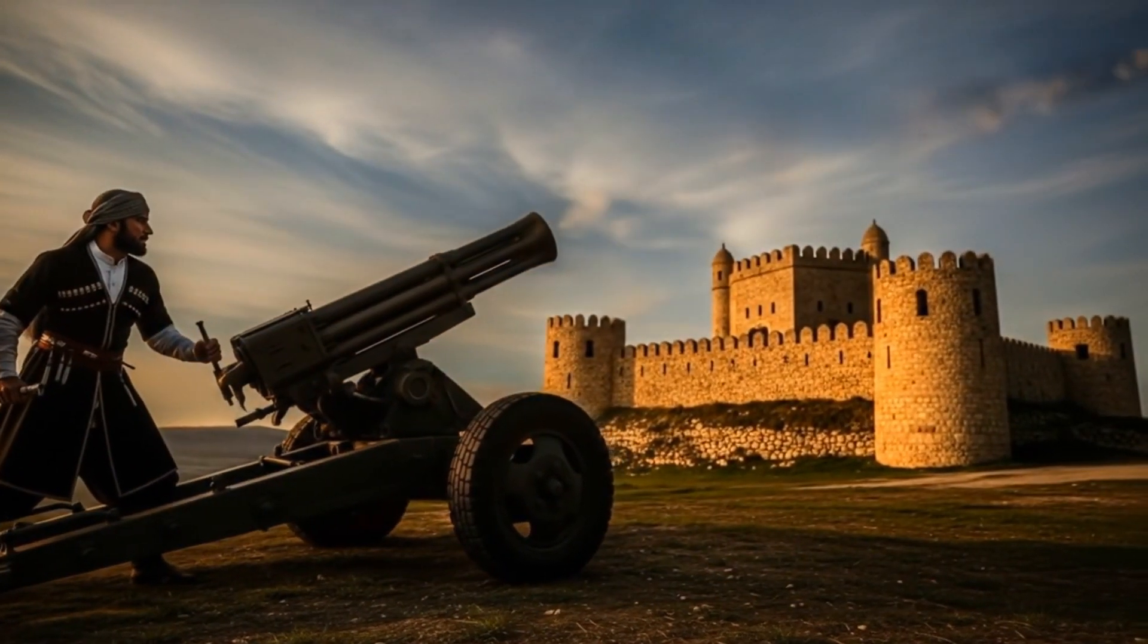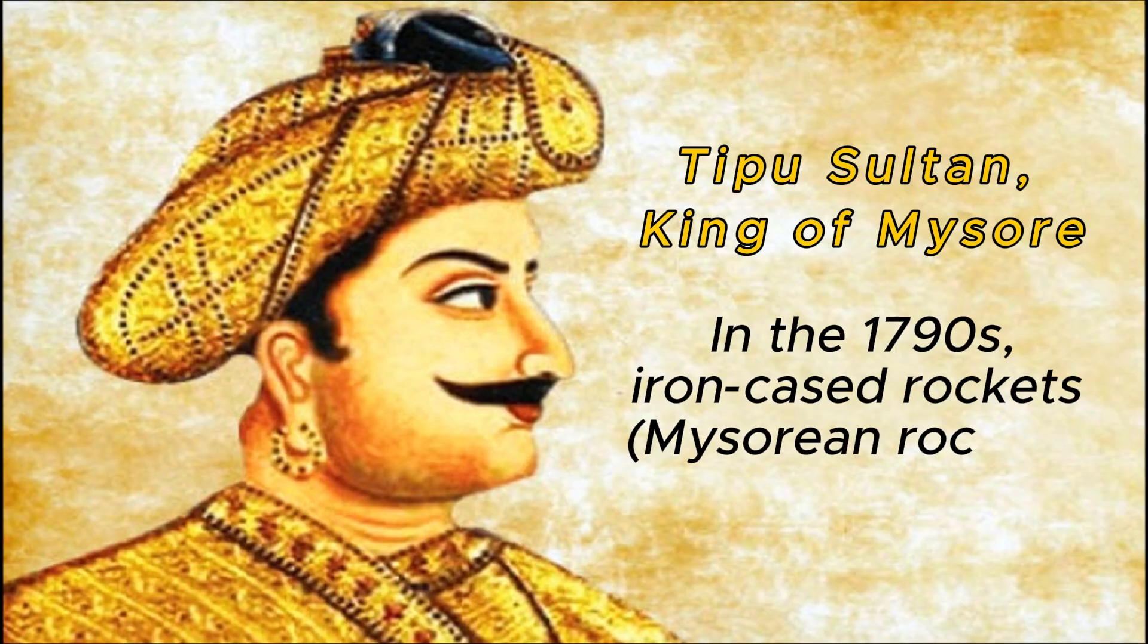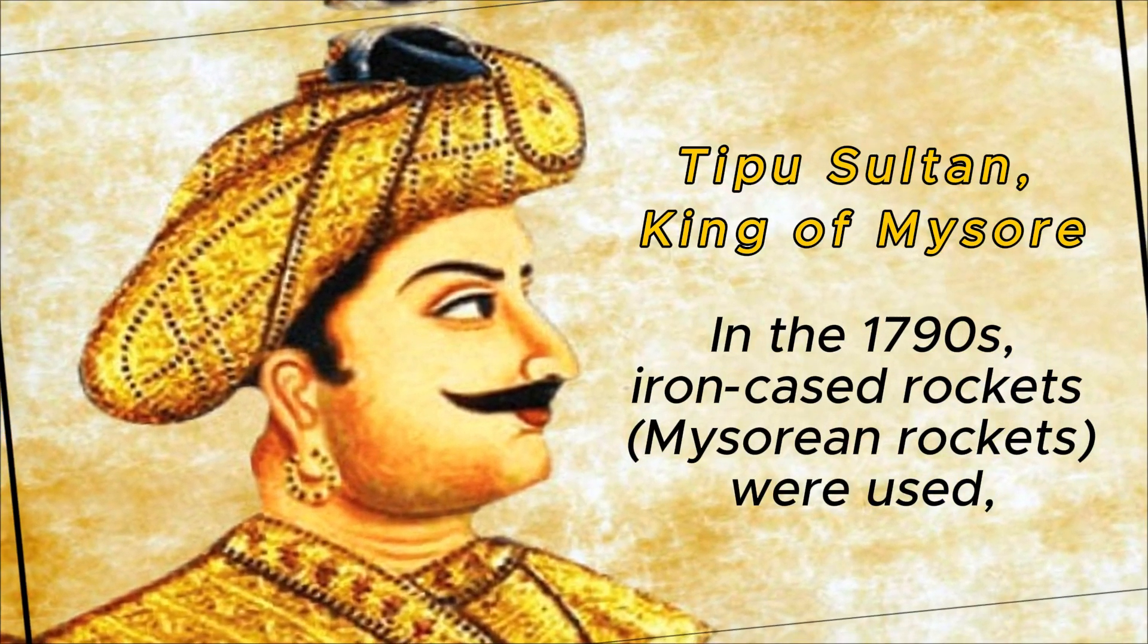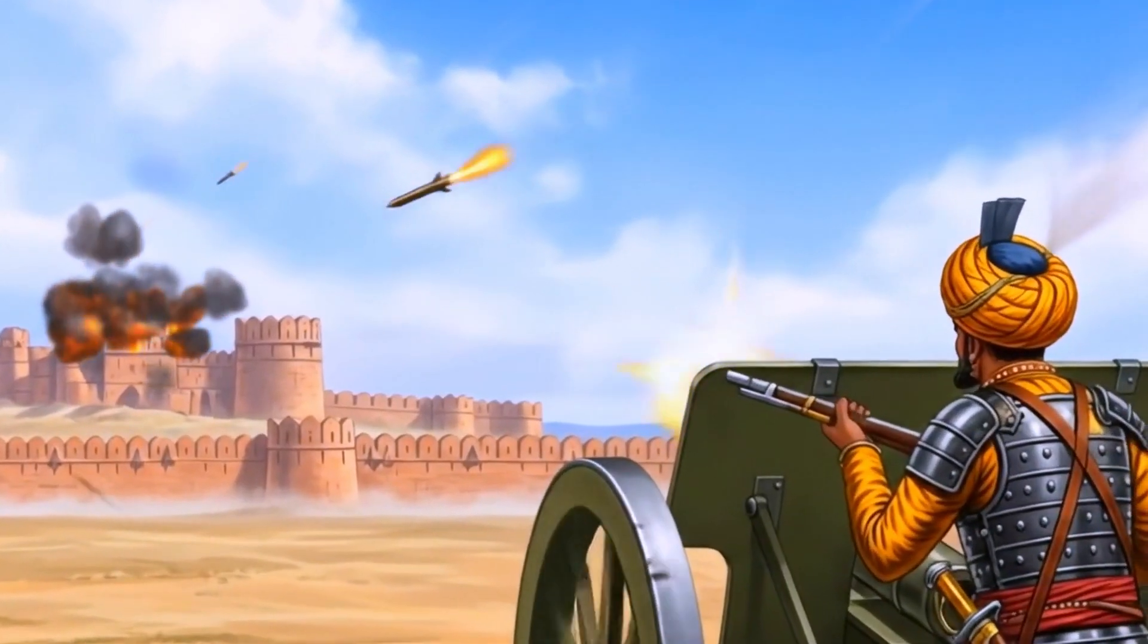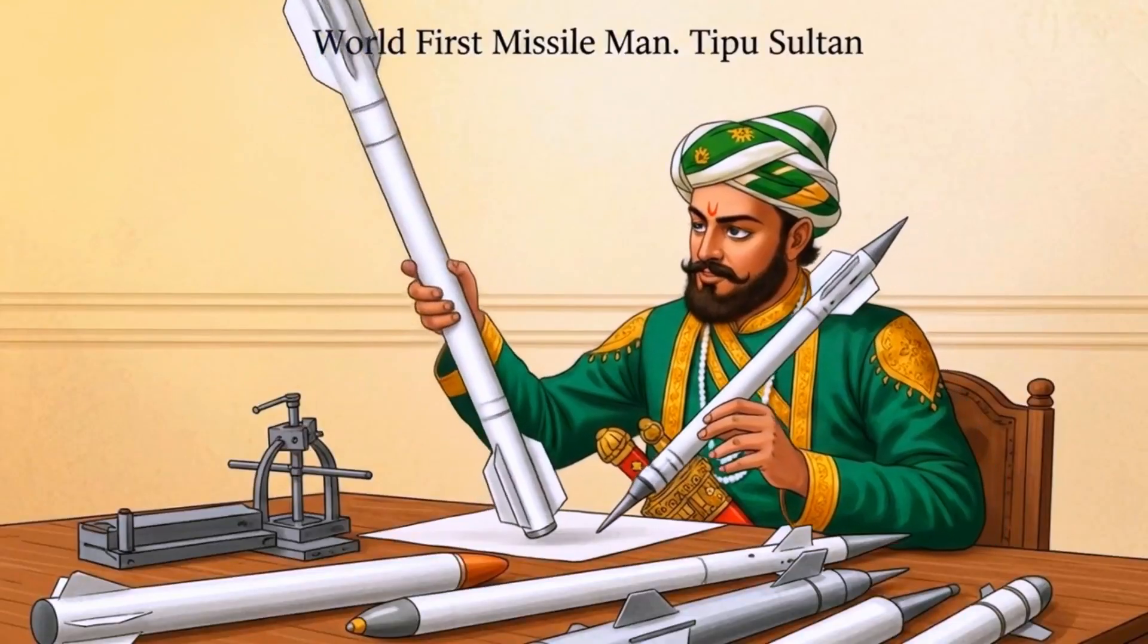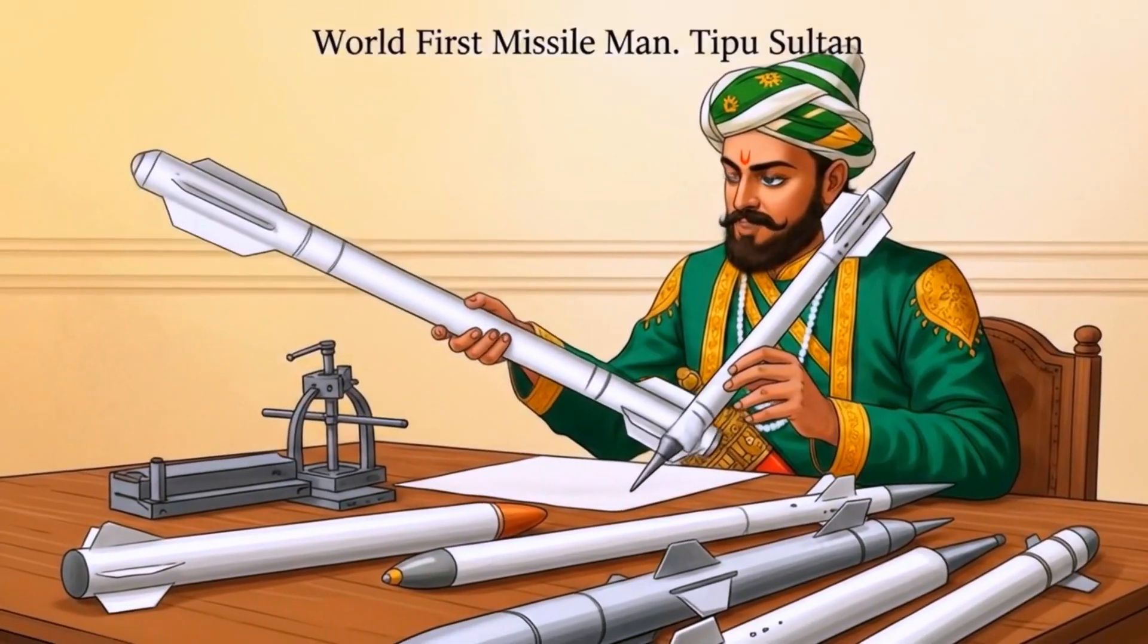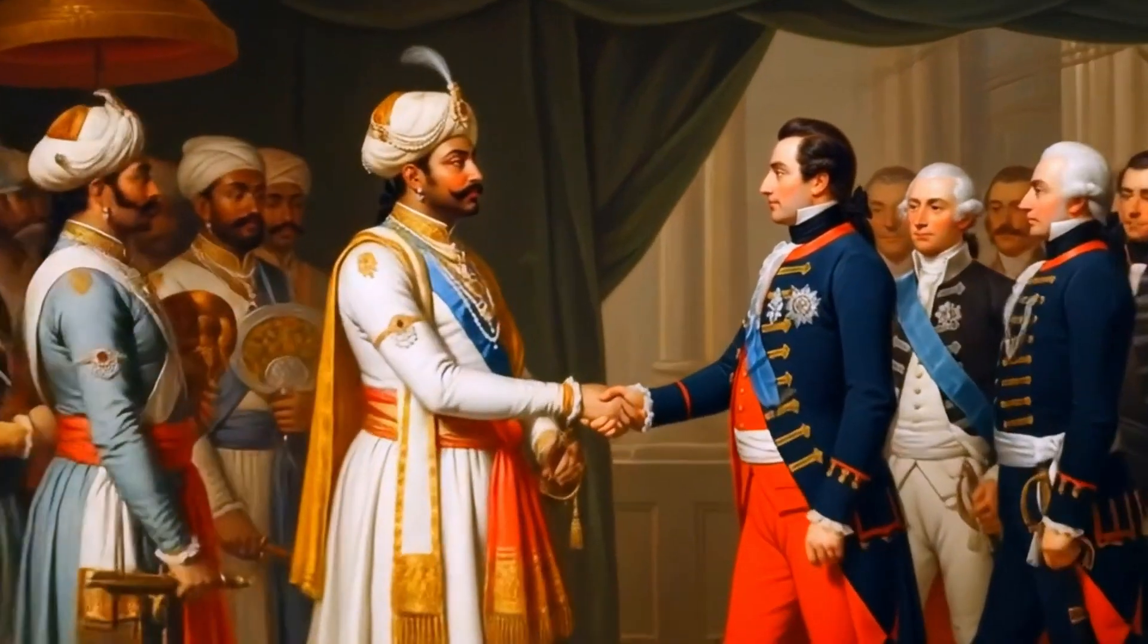Later, the idea spread to the Arab world and to India. Most notably, in the 1790s, Tipu Sultan, the ruler of Mysore, used iron-cased rockets known as the Mysorean rockets. These proved highly effective against the British forces. Eventually, the British carried this technology back to Europe.